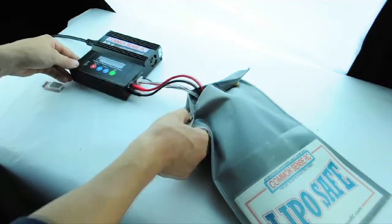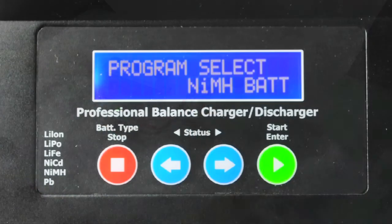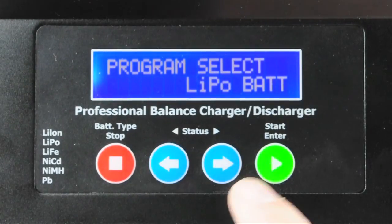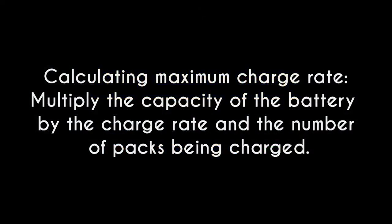Electron Pro batteries are rated for charging at a rate of 2C, standing for capacity. Since we are charging three 2200 milliamp batteries, we could use a charge rate as high as 13.2 amps.